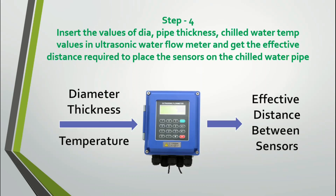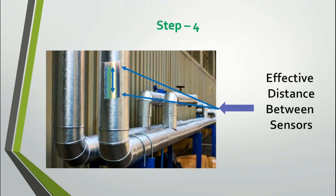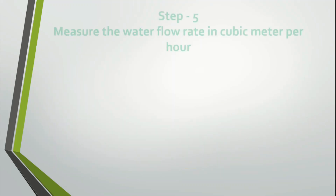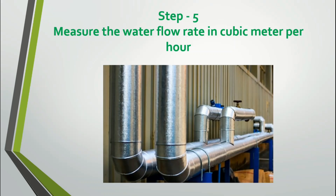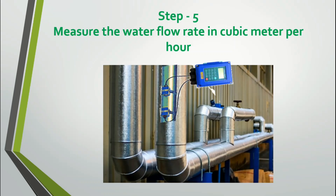This effective distance is the spacing we need to maintain between the two sensors on the pipeline. An ultrasonic water flow meter has two sensors which need to be placed on the pipeline at a calculated distance to measure water flow using the principle of ultrasonic waves. When you provide details like diameter, wall thickness, and water temperature, the ultrasonic flow meter calculates the effective sensor distance. Step 5: Place the sensors on the pipeline accordingly and measure the water flow rate in cubic meters per hour.